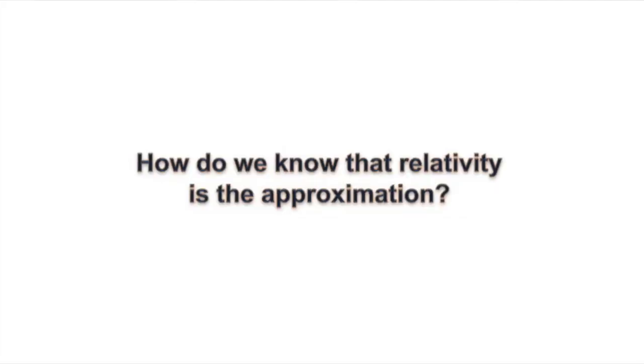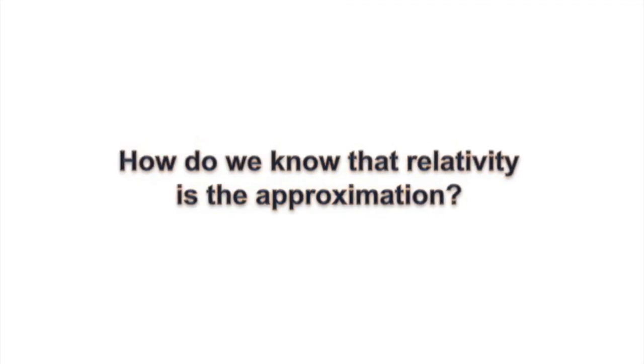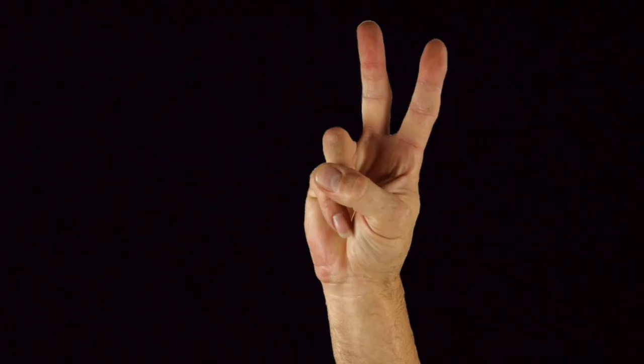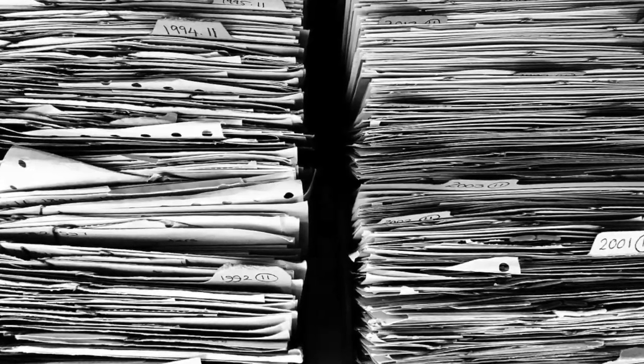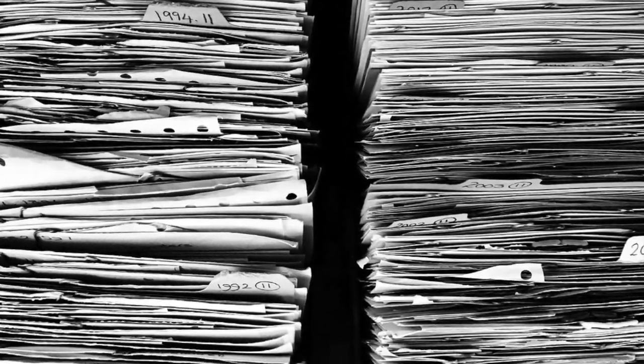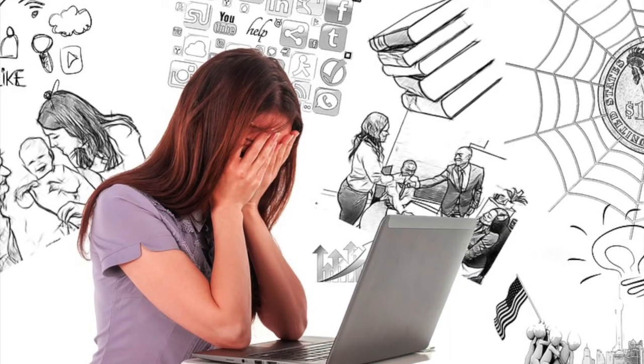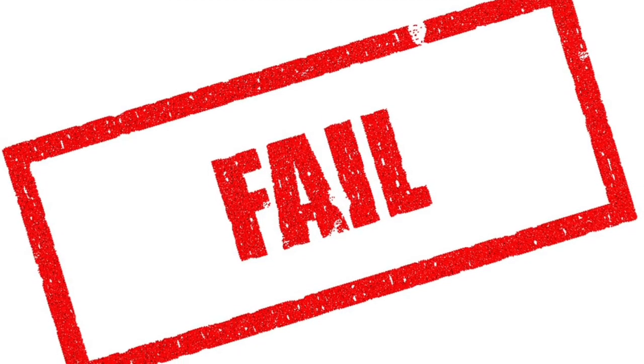This leads us to a new question. How do we know for sure that relativity is the approximation and not the other way around? There are two ways to answer this question. One way is to review every experiment and repeatedly show that modern mechanics outperforms relativity. As you can imagine, that approach is extremely time consuming.